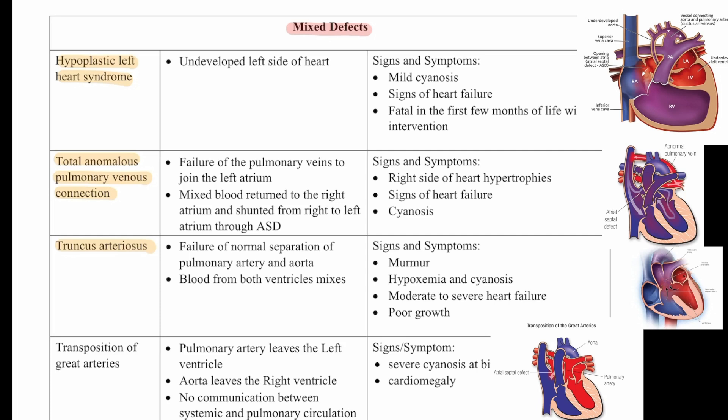Then we have transposition of the great arteries. The pulmonary artery leaves the left ventricle and the aorta leaves the right ventricle. There is no communication between systemic and pulmonary circulation. We'll see severe cyanosis at birth and cardiomegaly.